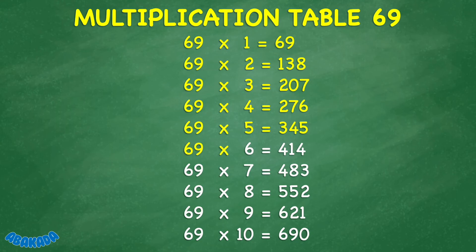69 times 6 equals 414. 69 times 7 equals 483. 69 times 8 equals 552. 69 times 9 equals 621. 69 times 10 equals 690.